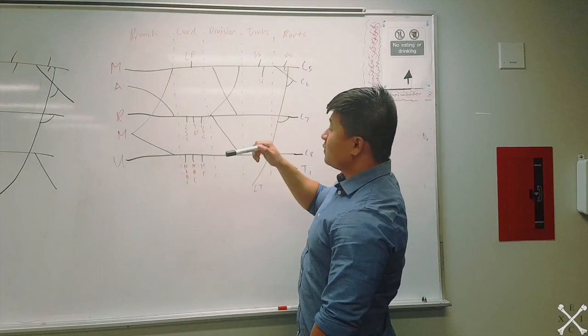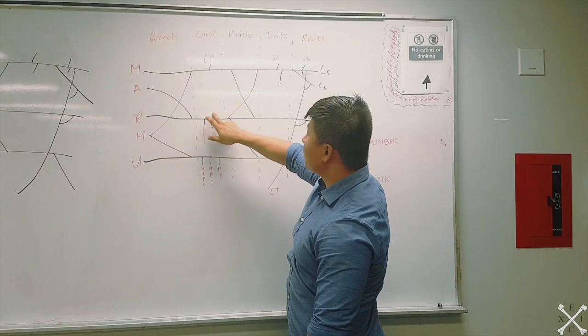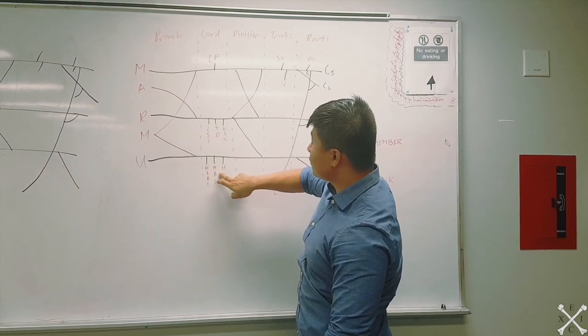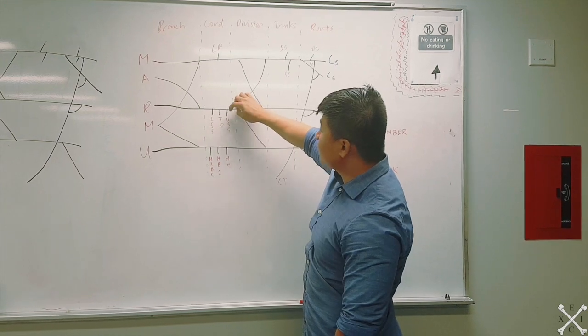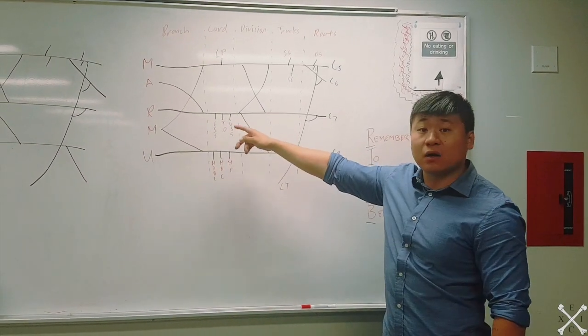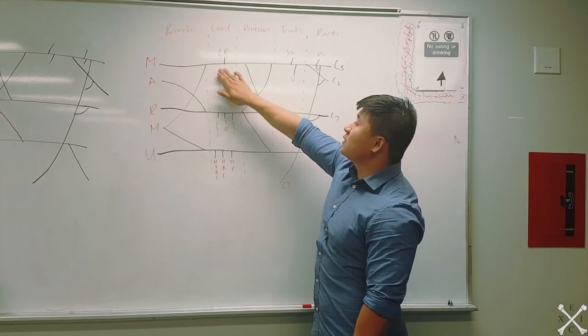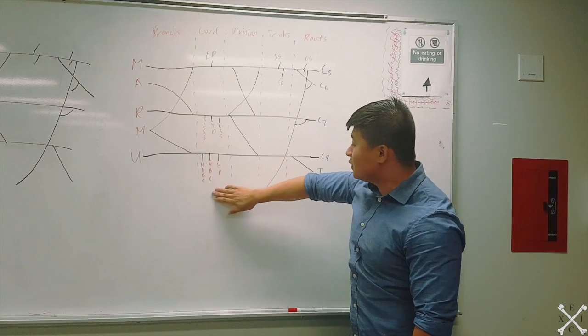Now for the cords: this one is your lateral cord, this one is your posterior cord, and this one is your medial cord. To remember which is which, the posterior cord lies underneath or posterior to your axillary artery, the lateral is to the lateral of your axillary artery, and the medial is to the medial side of your axillary artery.